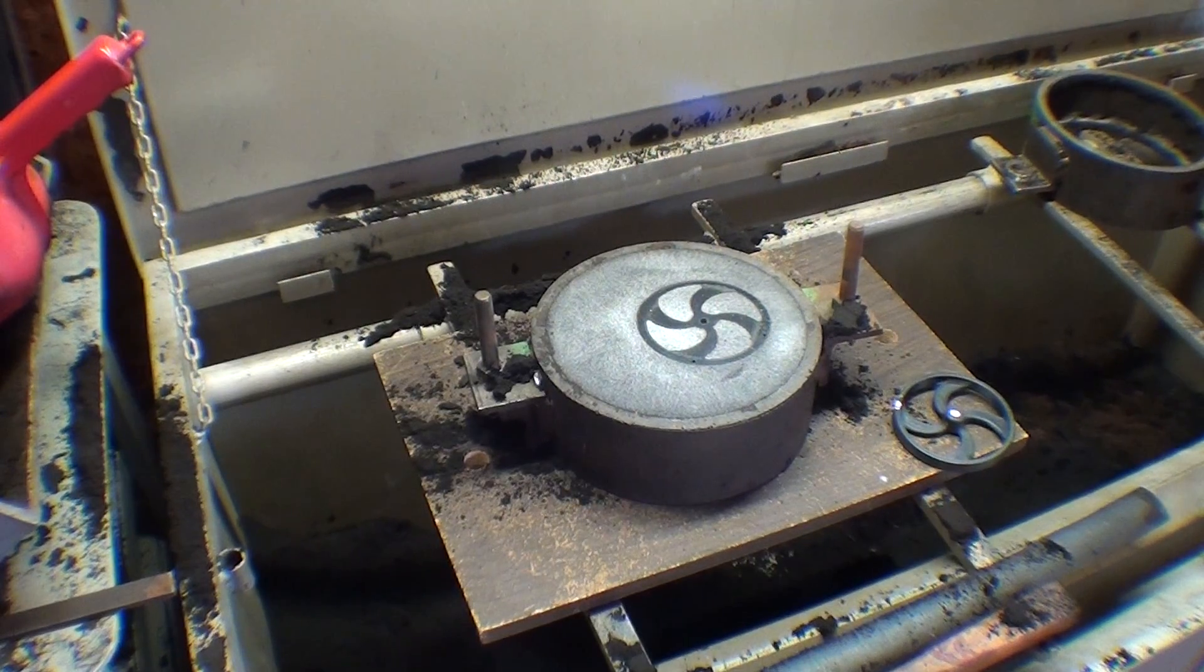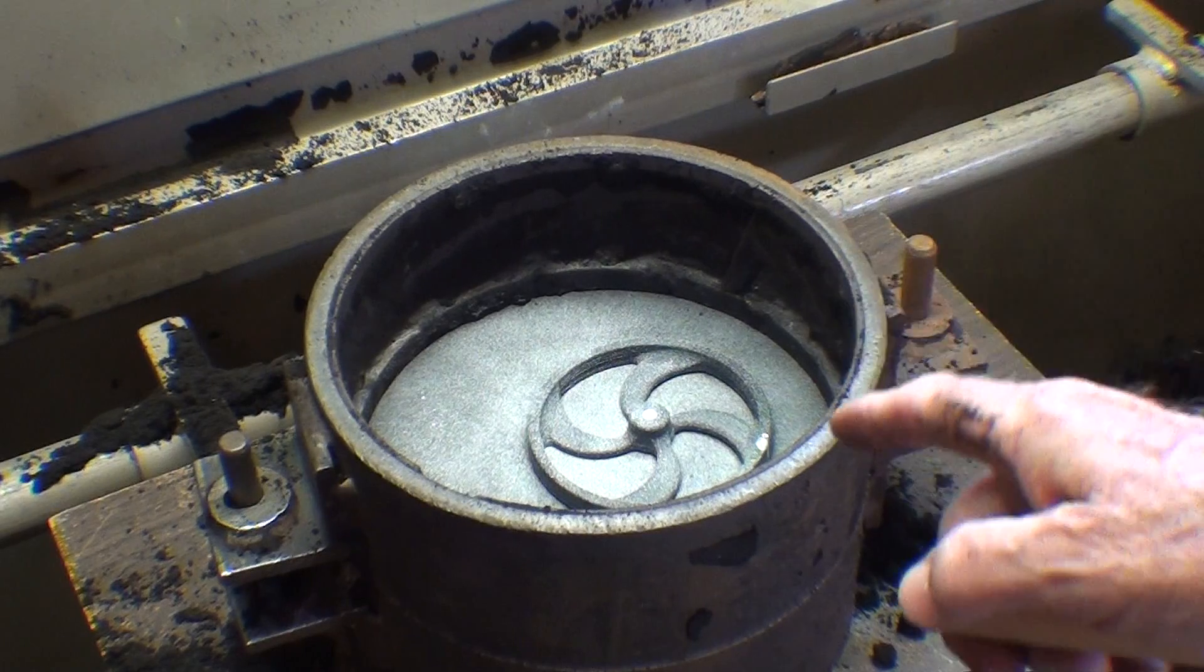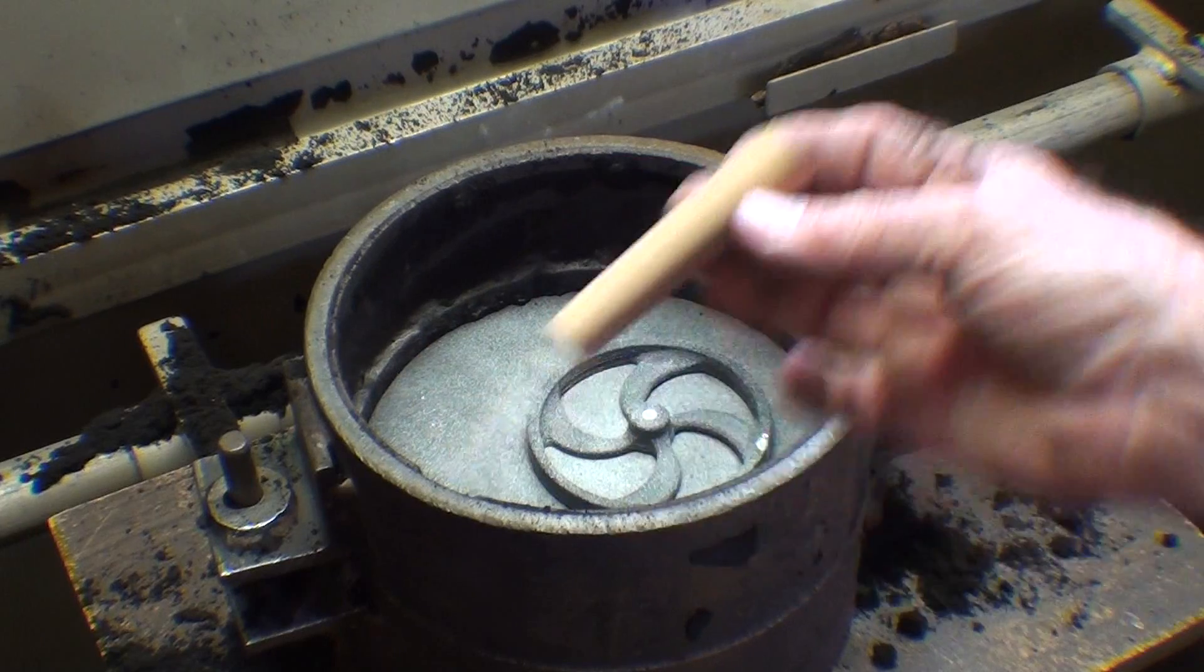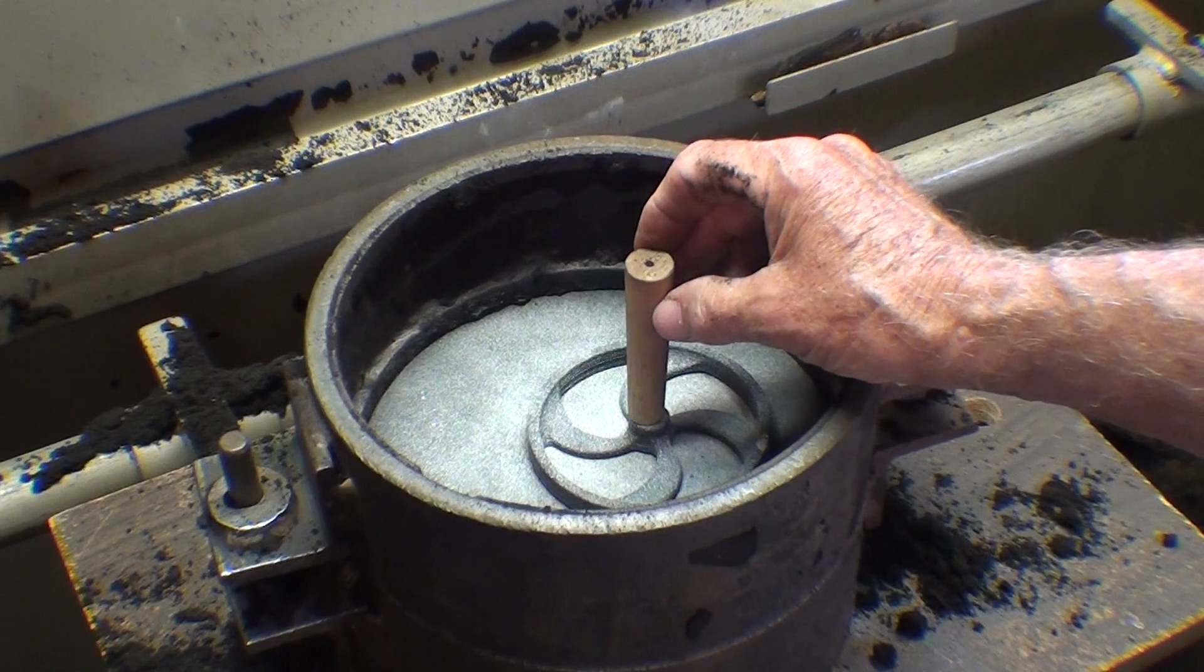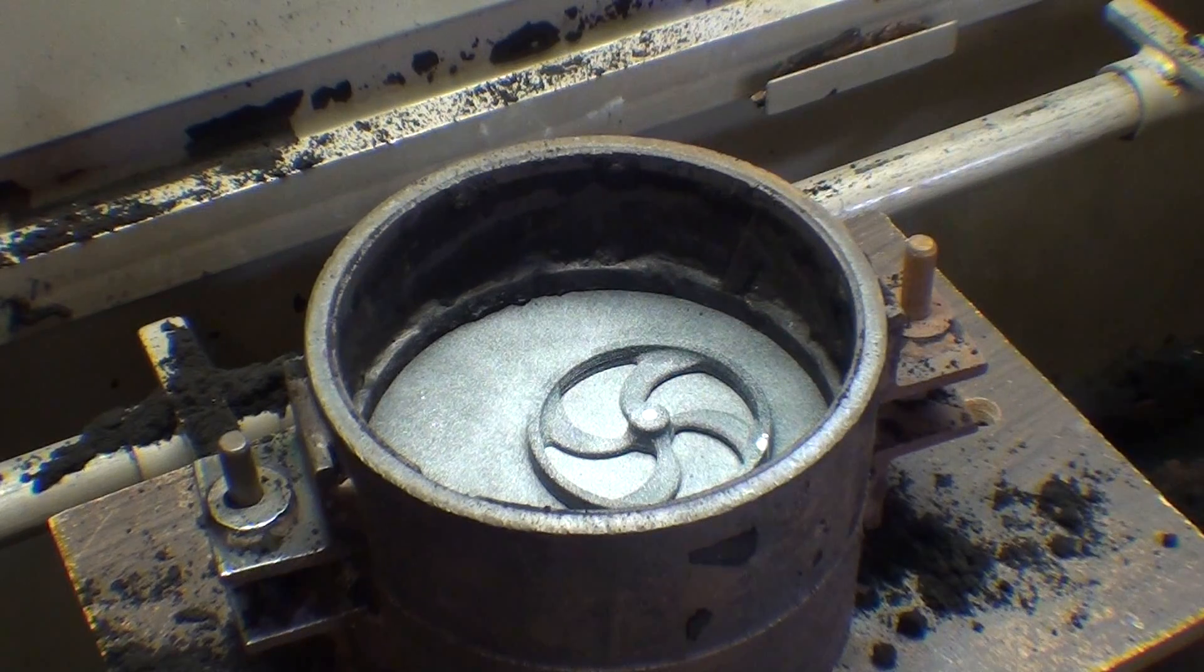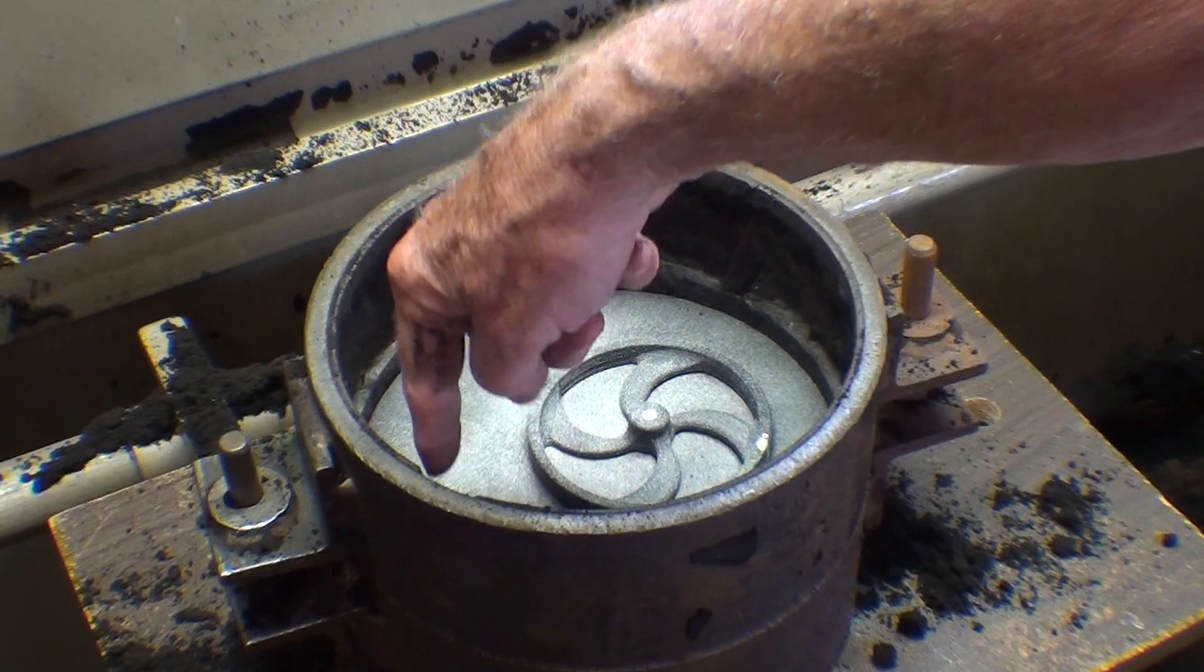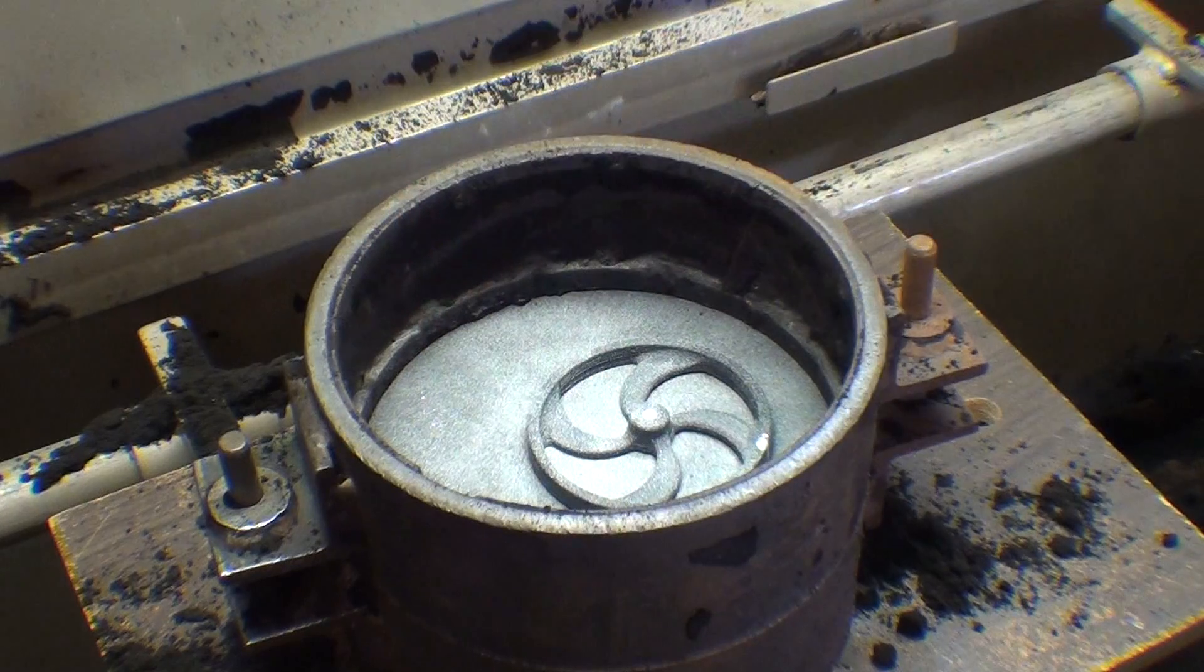I'm still not sure whether I'm going to pour zinc or lead into this one, but at any rate, I'm going to put this tapered riser right here on the hub because that's the thick spot, and I'm going to cut a sprue hole right about over here with a gate running into it.